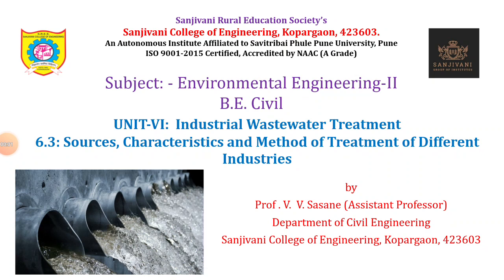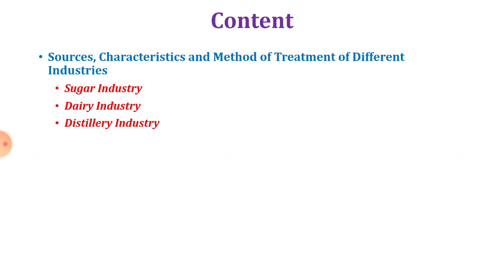In continuation of the previous discussion, here we are going to discuss the sources, characteristics, and methods of treatment of different industries. The three industries we will cover are sugar industry, dairy industry, and distillery industry. Let us see the sugar industry first.